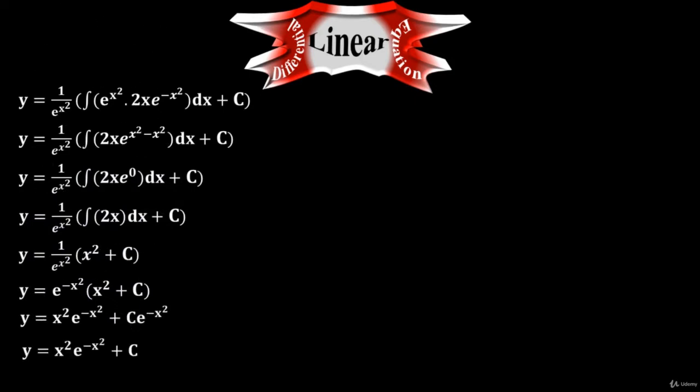So y equals to x squared times e to the minus x squared plus c. Why do we replace c times e to the minus x squared with just c? Because it is an arbitrary constant — whether you take the value of c as negative, or whether you multiply it by any value, at the end it is still an arbitrary constant. So c times e to the minus x squared, or just c, is the same thing. Therefore we do not need e to the minus x squared with the c. This is the final value for the general solution in step two.